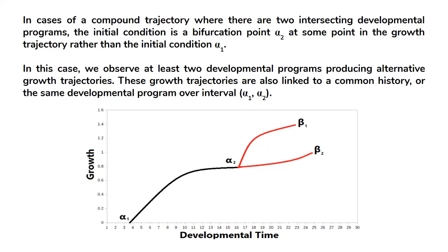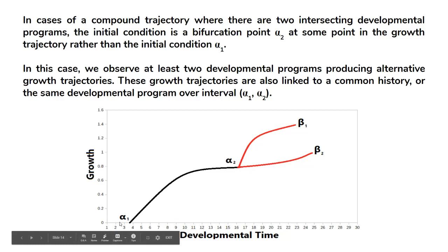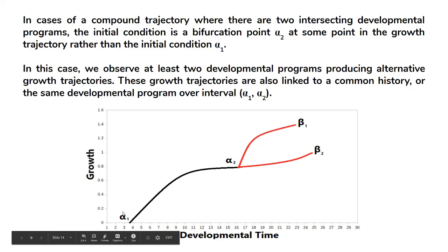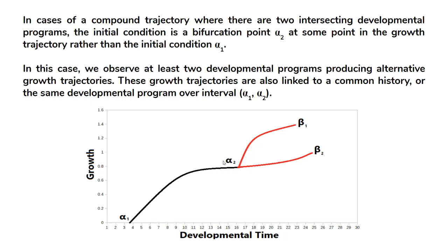We can also model compound trajectories that bifurcate at some point. Starting at alpha 1, the growth trajectory is the same for both cases up to alpha 2. At alpha 2 there is a bifurcation point, so there are two offset points each with different rates of growth. We have two intersecting developmental programs that bifurcate here but share an identical developmental trajectory in the black part. We can observe these alternate growth trajectories, link them to a common history, and use our notation and parameters to measure each aspect of this bifurcating trajectory.